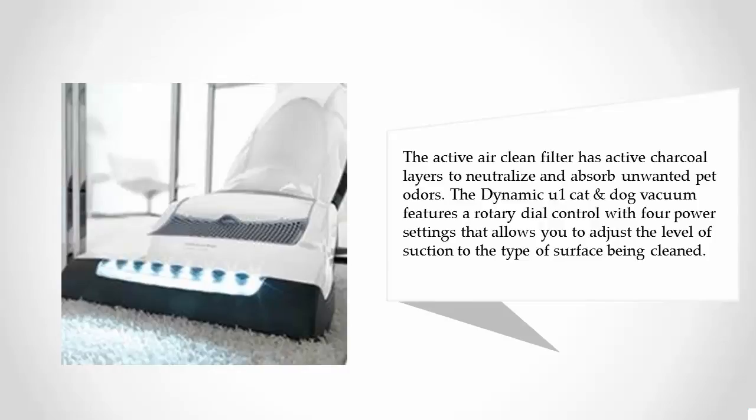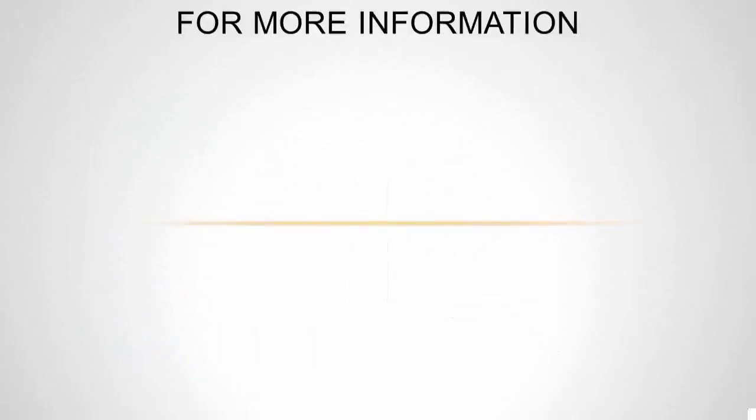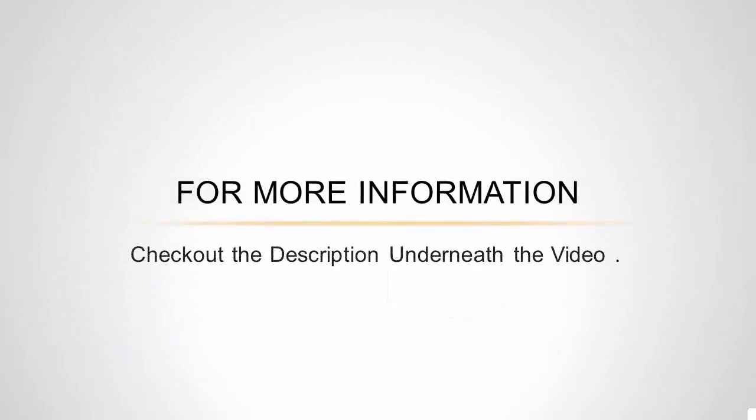The Dynamic U1 Cat and Dog vacuum features a rotary dial control with four power settings that allows you to adjust the level of suction to the type of surface being cleaned. For more information, check out the description underneath the video.